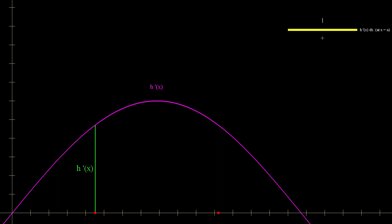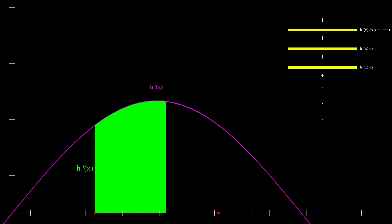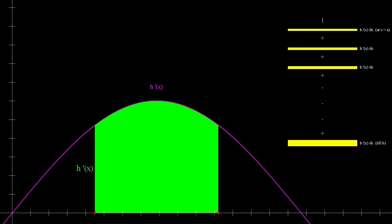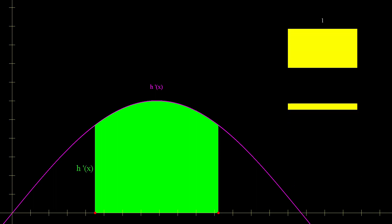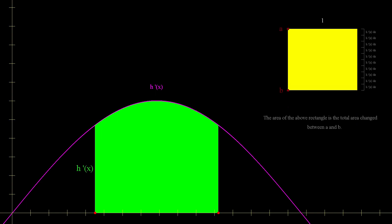Now we have our first iteration for our rectangle. We can take another nudge in x and get our second iteration. And then our third. And we can keep doing this until we reach b. Adding all these iterations, we get the total area of the rectangle changed between a and b. What we just did, finding the area under the graph of a function between two points, is known as finding a definite integral.